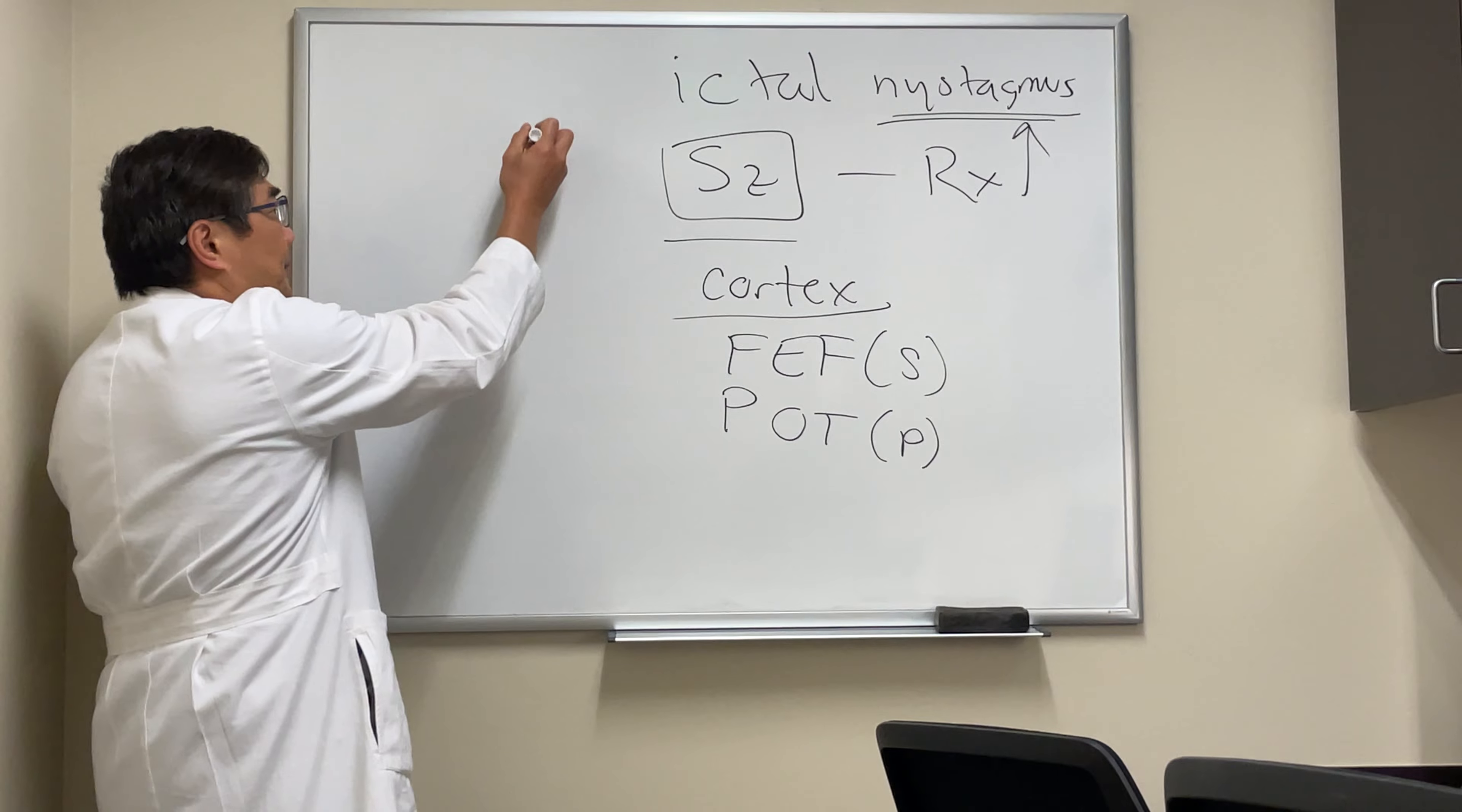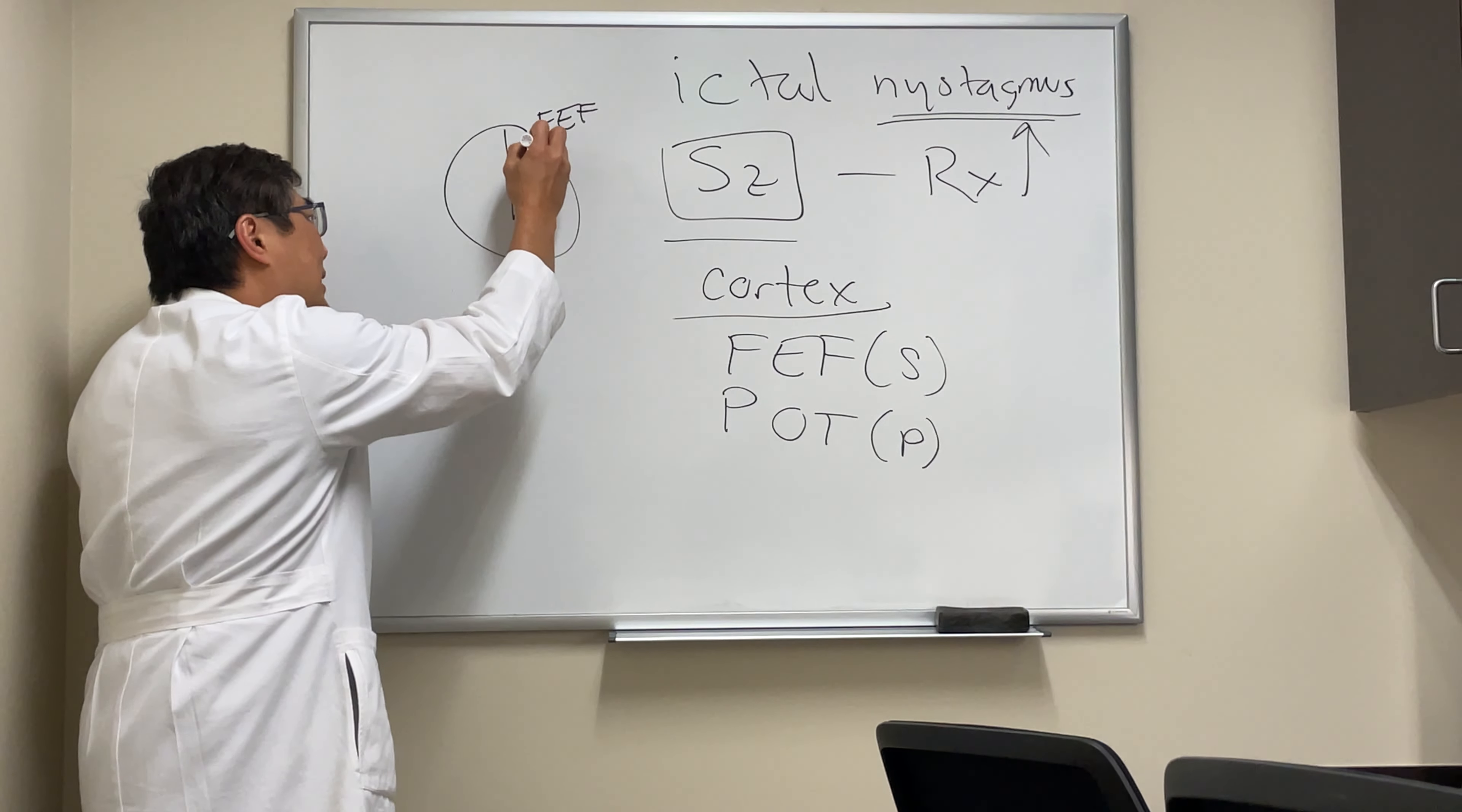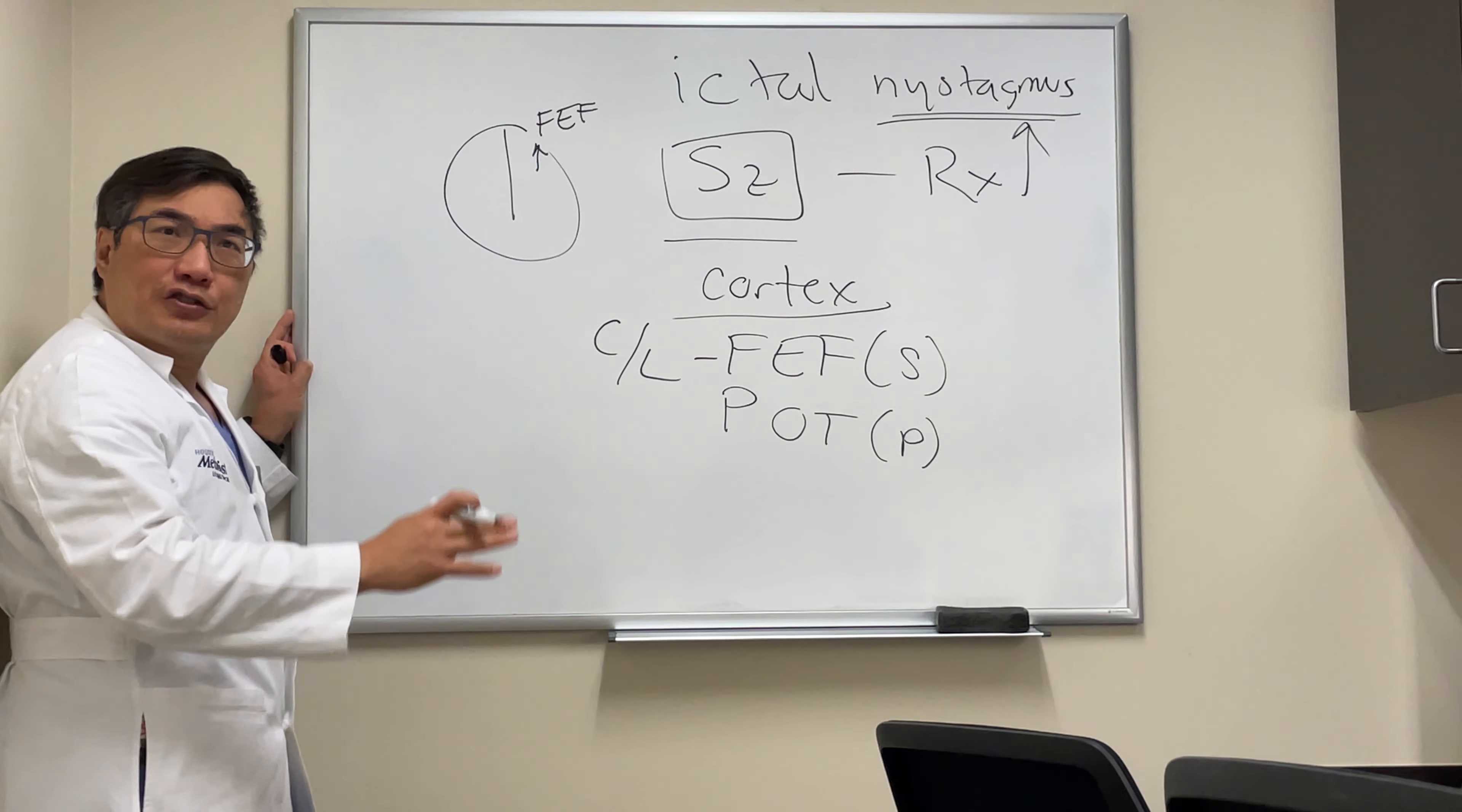And so when you have a seizure in the frontal eye field, that is an irritative focus. An irritative focus will increase the electrical activity, and because it's the contralateral frontal eye field that controls the saccade.